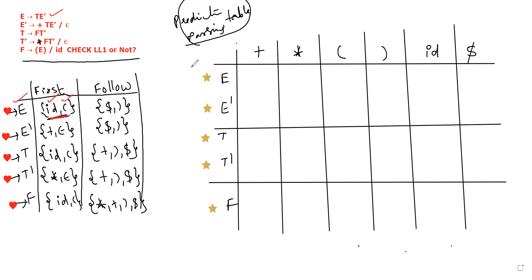So id is inserted here. E tends to T E-dash. We insert them one by one into the table.